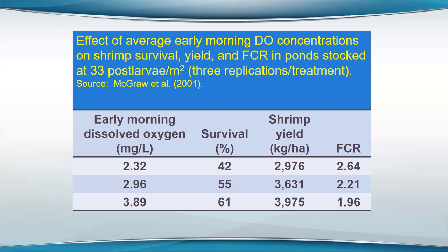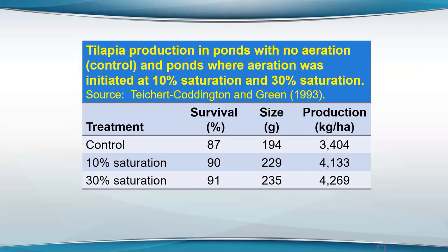The principle you can see in this study is: maintain better oxygen and you get better yields and better FCR. There's similar data with tilapia where some ponds were maintained around 10% of saturation and others around 30% of saturation in the morning, with a control where oxygen just dropped however low it would. Fish tended to be bigger with more oxygen, but there wasn't much difference between 10% of saturation and the control — showing tilapia is much hardier than other species.